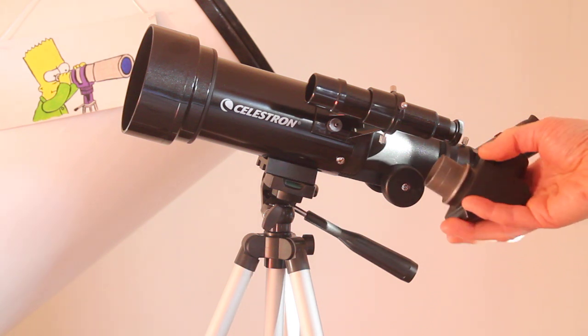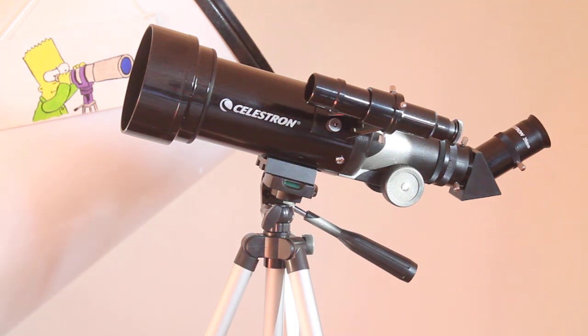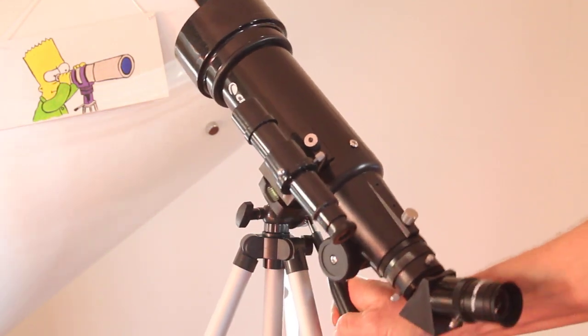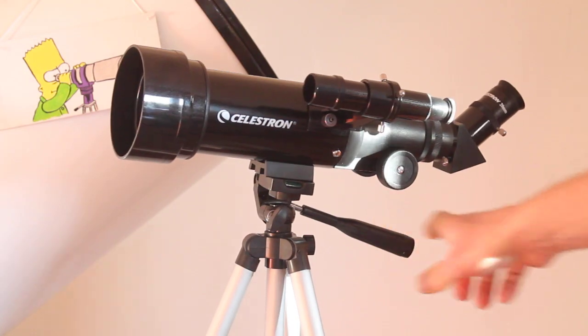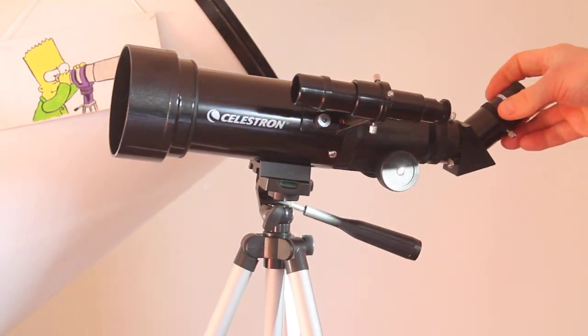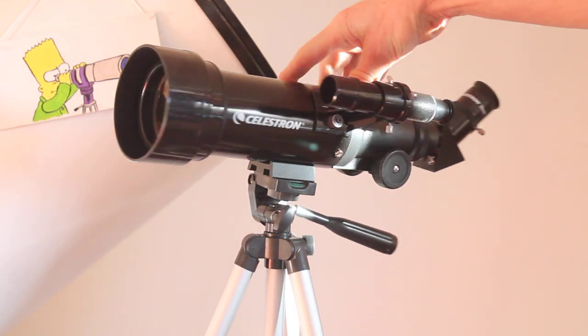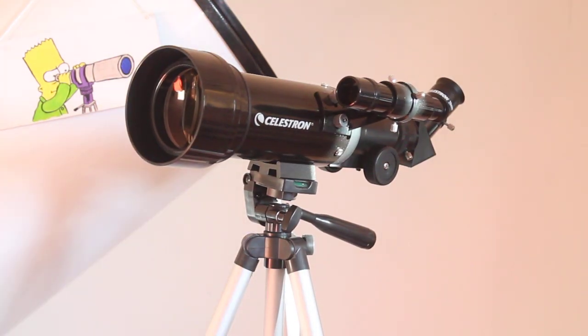So that means if you are looking high up or at the zenith, you will not have to bend your neck as much to look through the eyepiece. So that is the Celestron Travelscope 70, and my own personal choice of if I was to pick one item that would improve your viewing experience with this telescope.